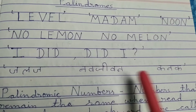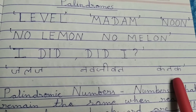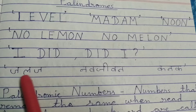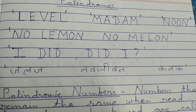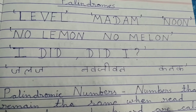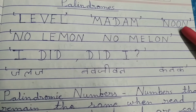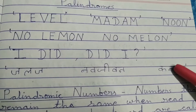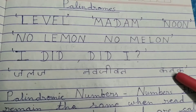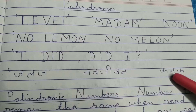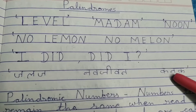Just like in English, palindromes exist in different languages too. For example, in Hindi: jalaj, navjeevan, kanak — these words read the same whether we read them left to right or right to left. So we've seen English palindromes and Hindi palindromes — in maths, we also have palindromes.